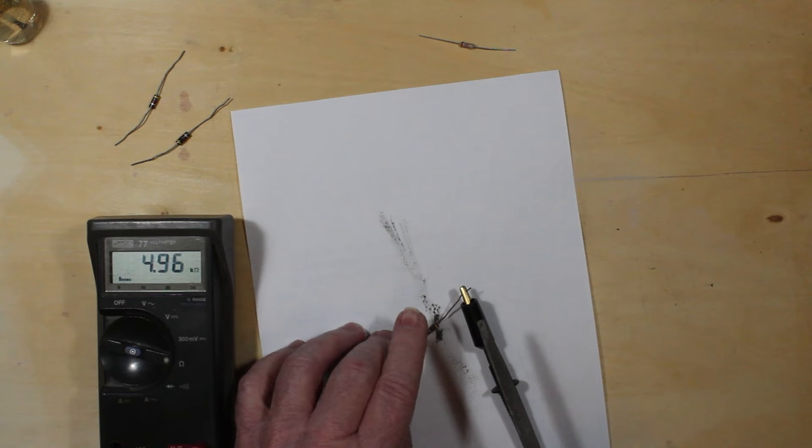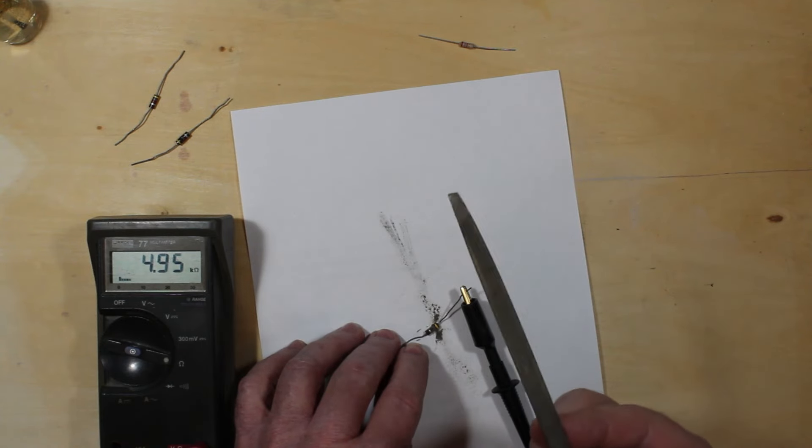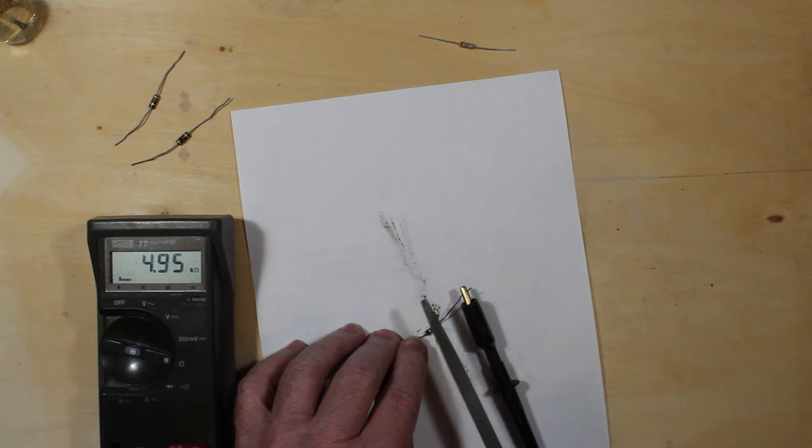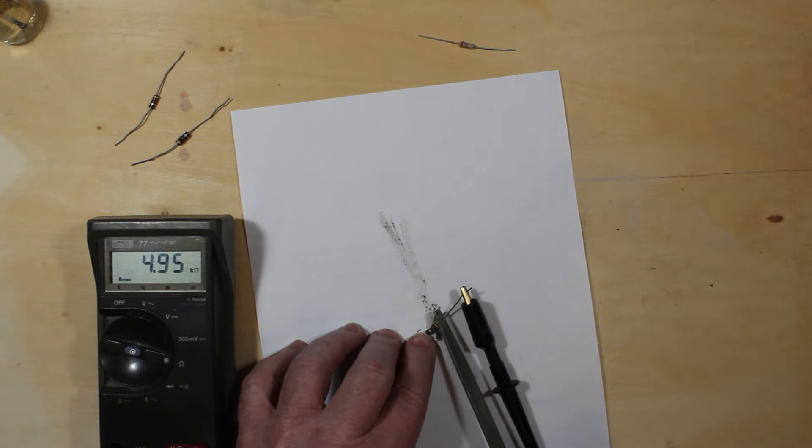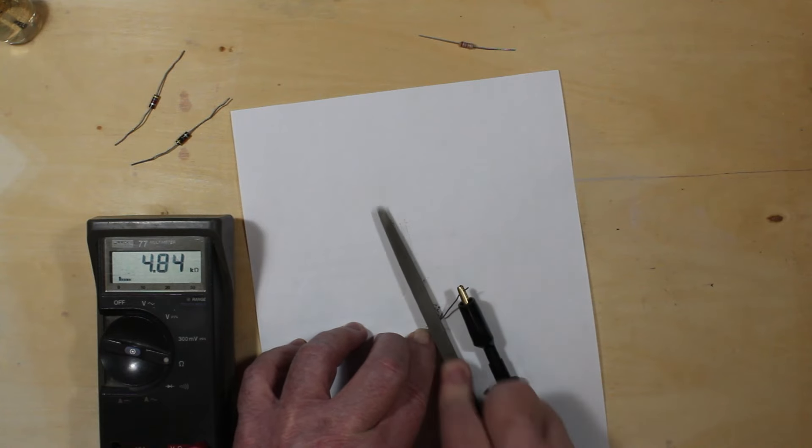One thing to remember as you're getting fairly close is that your file is conductive and as you put that in there, it's conducting across it and actually making the resistance go lower. So we're zooming in here to 5000 ohms, so got to be careful and got to remember that.